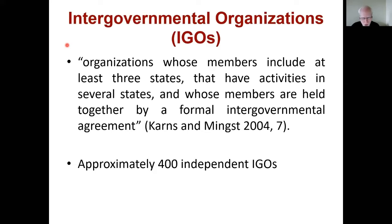There are approximately 400 different independent intergovernmental organizations around the world, covering a whole range of different topics, sizes, and issue areas. We're not going to learn about all of them — today we're just going to focus on some of the most prominent ones and what they do.